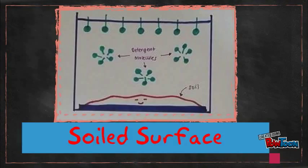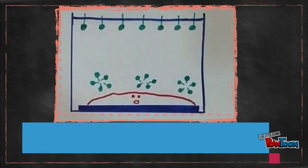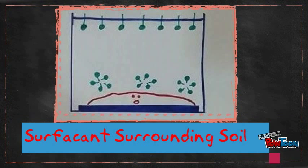When detergent is put into the water, the hydrophilic ends will get strongly attracted to water while the hydrophobic ends face the soil particles. The detergent molecules will then surround the soil particles. The hydrophobic end will start to attach themselves on the soil particles which is shown here.